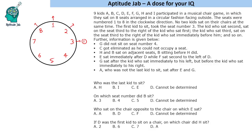The kid who sat second sat on the seat third to the right of the kid who sat first. So the second person to sit sat on the seat which is third to the right of seat 3. Since they are facing outside, third to the right will be that seat. So this is the second person to sit.